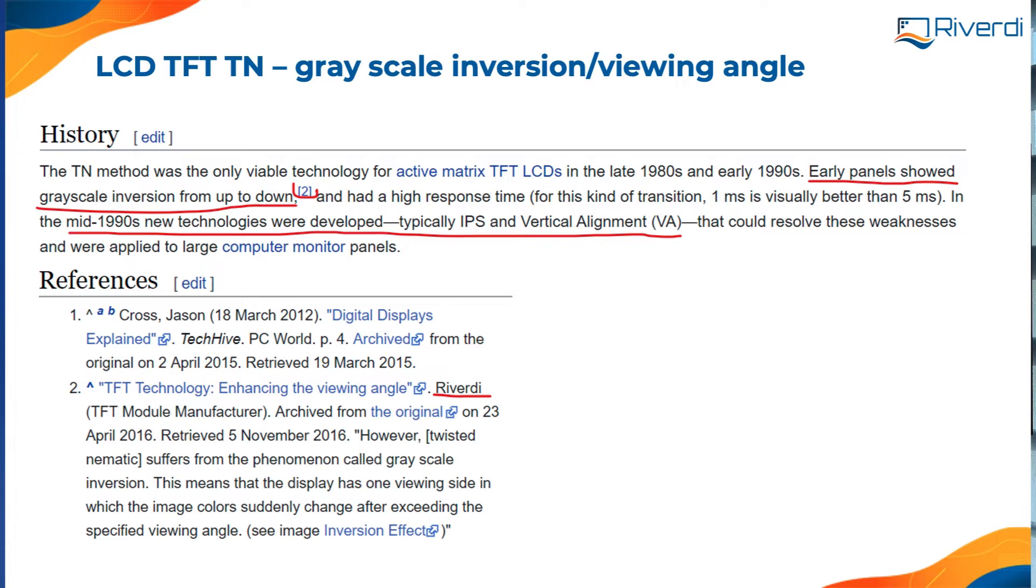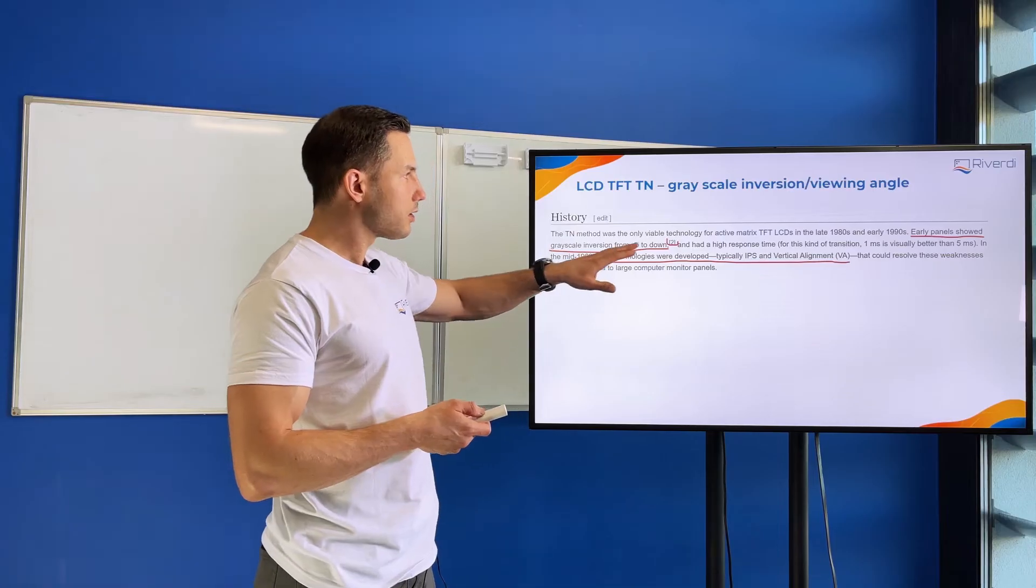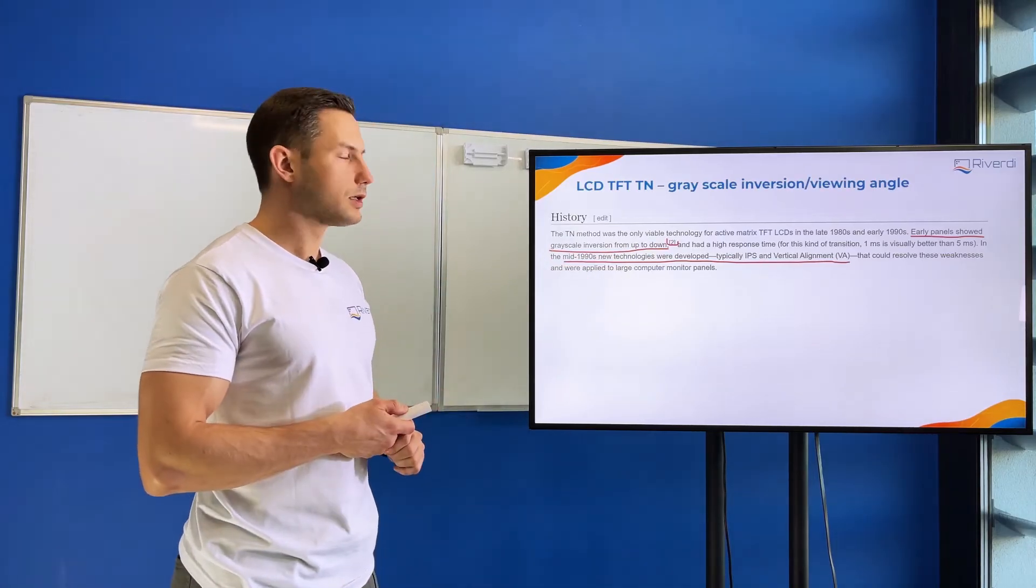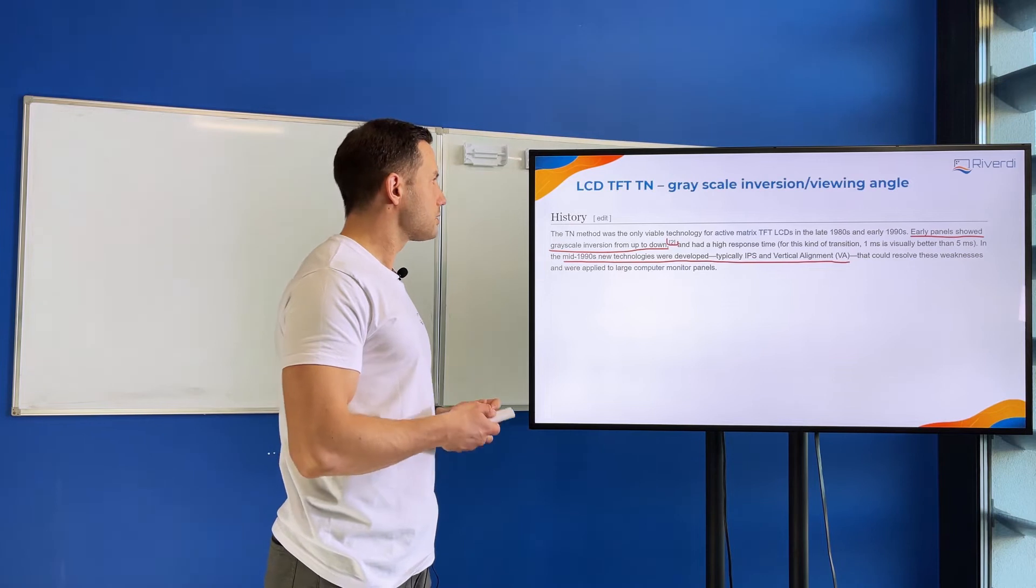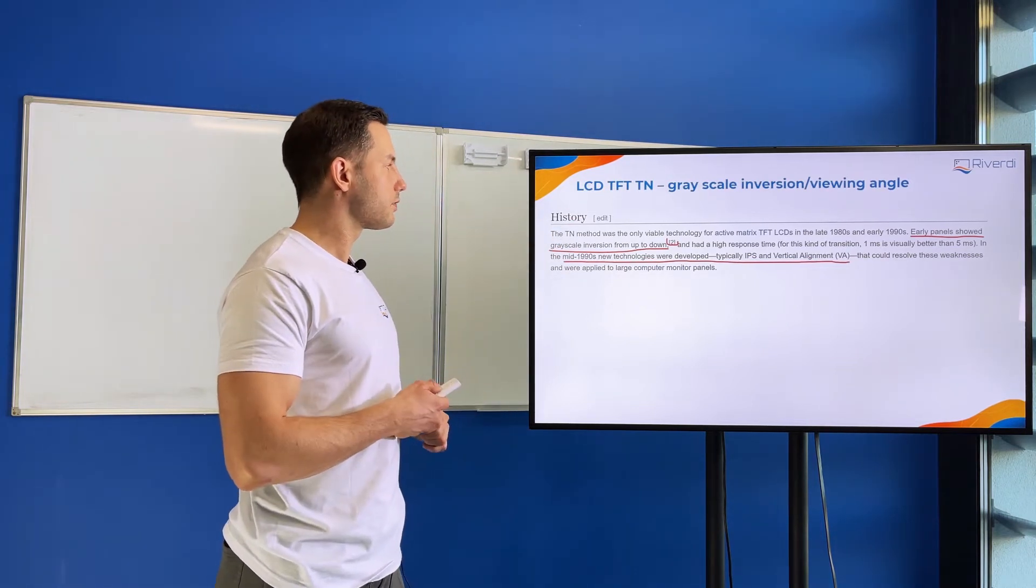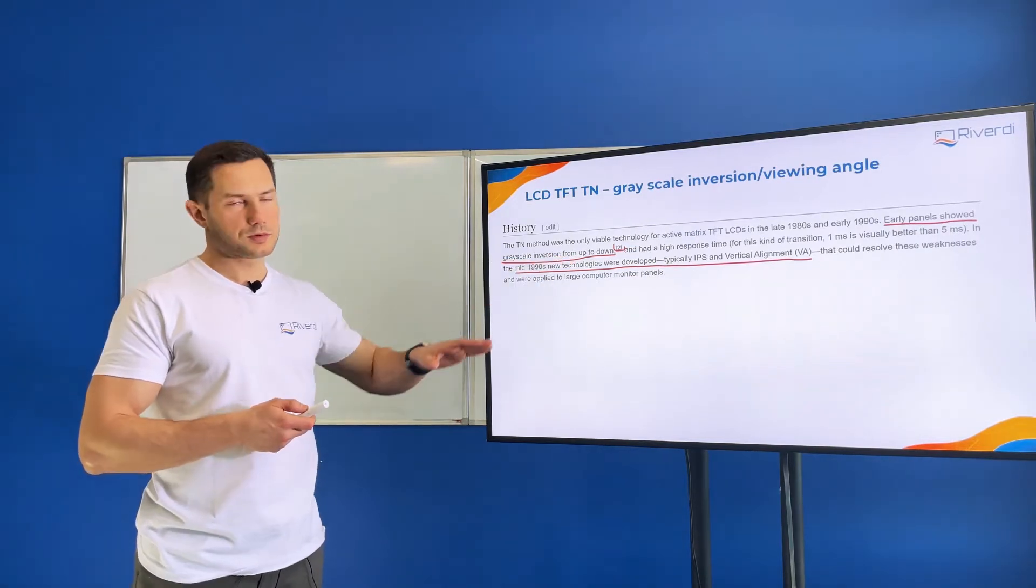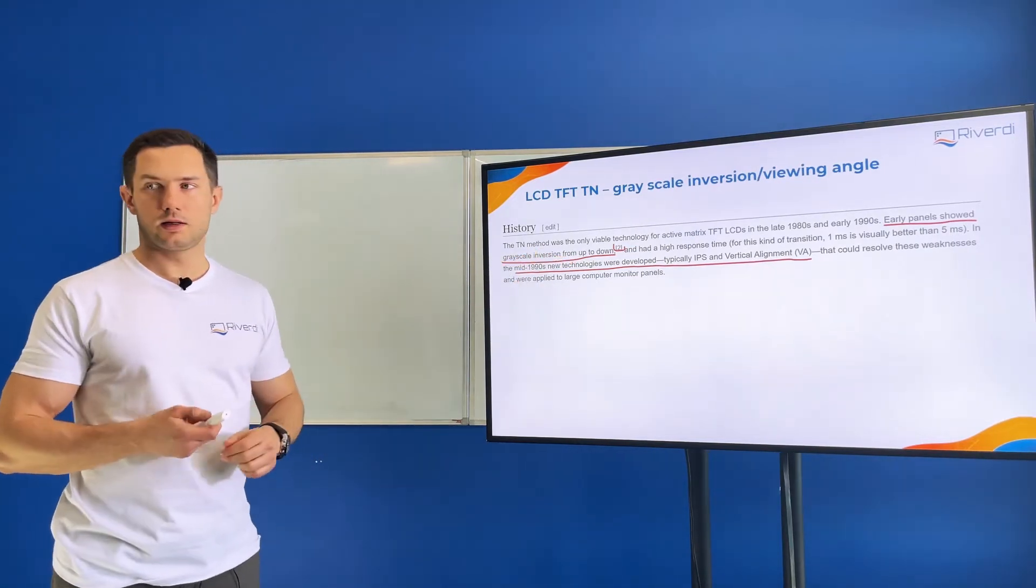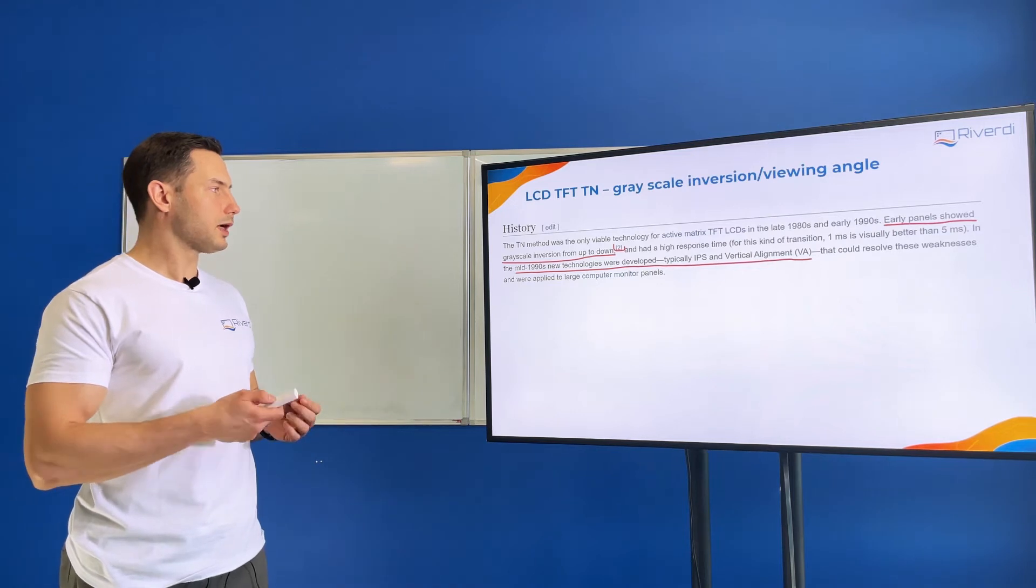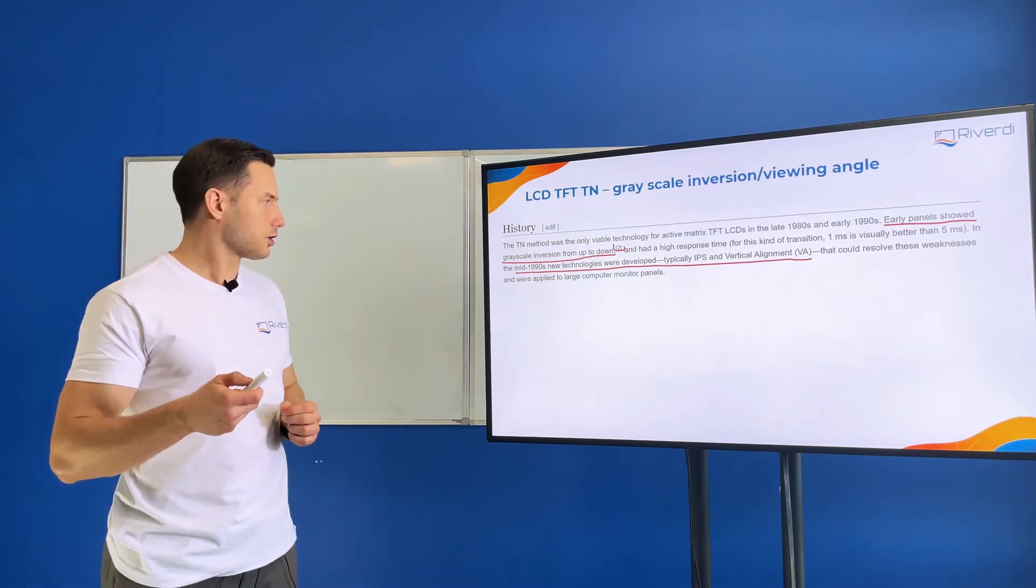This is from Wikipedia's IPS description—you'll find the link in the description below. It says that some early panels, and actually even nowadays you can buy TN displays that are very popular, will have grayscale inversion. It's not necessarily from up to down like for a monitor; it can be any angle you need to check in the datasheet.